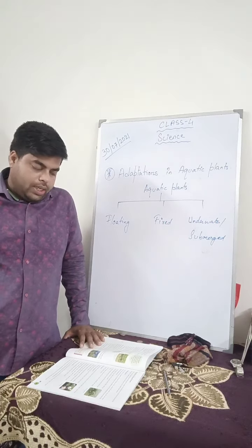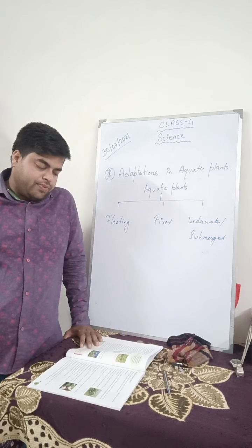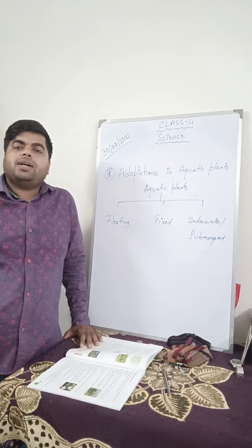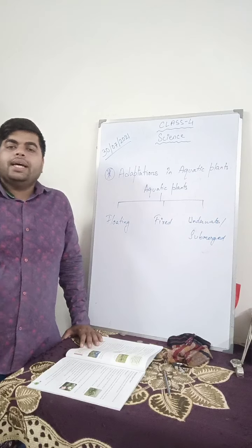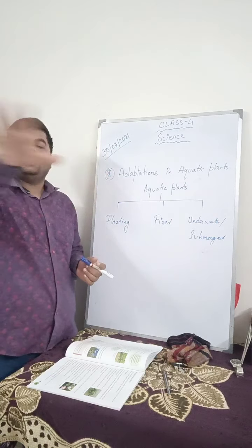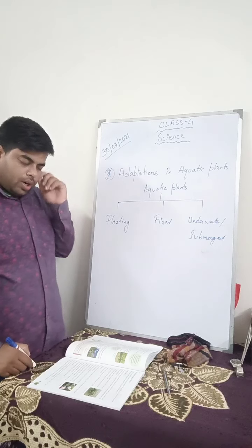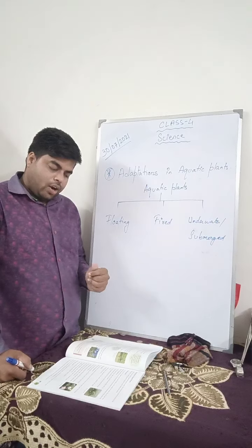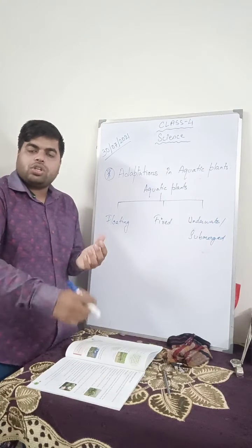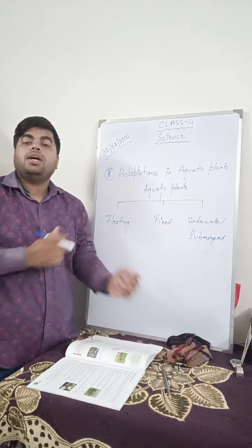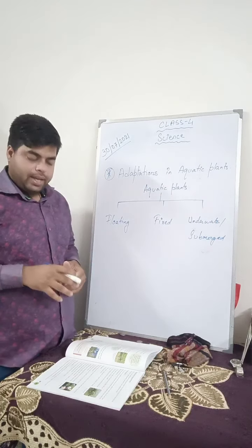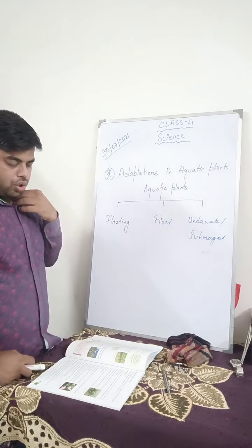Floating plants are plants that float freely on the surface of water. They do not have fixed roots and thus are not attached to the bottom of the water body. Because they are not attached to the soil inside the water, they can float here and there and move freely. They show the following adaptations.